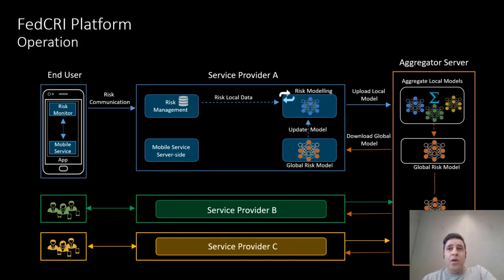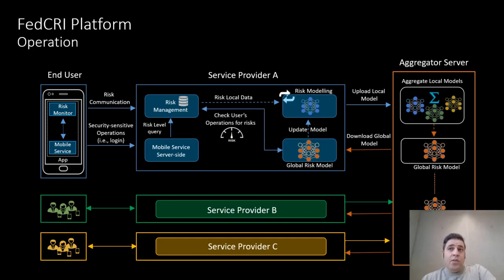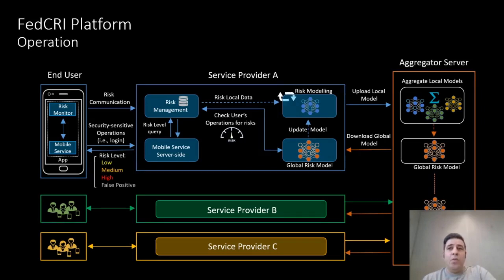The last phase is risk detection. Once a trained global model is available, the service provider can use it for risk detection. In particular, upon a user operation such as login or another security-sensitive operation, the risk indicators associated with the login are communicated over a dedicated secure channel to the risk management backend server and evaluated against the global risk model to obtain the risk value associated with the user. When the app interacts with its service provider, the mobile service on the server side will query the risk management for the application's risk level and consequently adapt the services provided to the application. For example, if the risk level is deemed to exceed a specific threshold, security-critical functions may be disabled or sensitive information made inaccessible to the application.